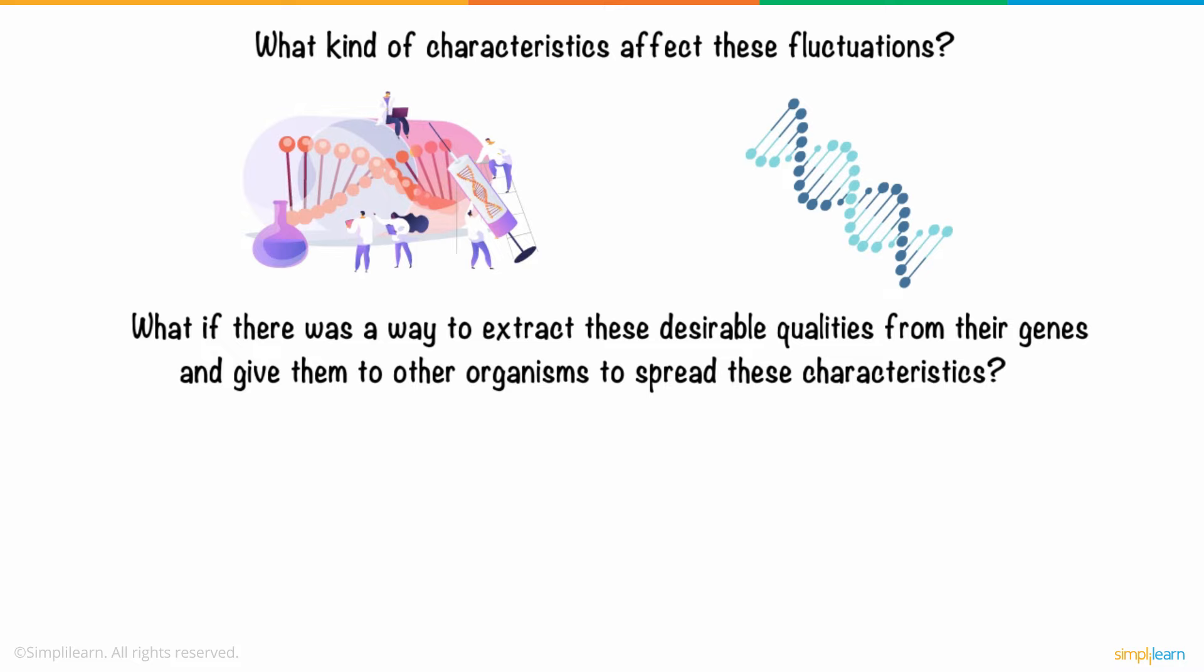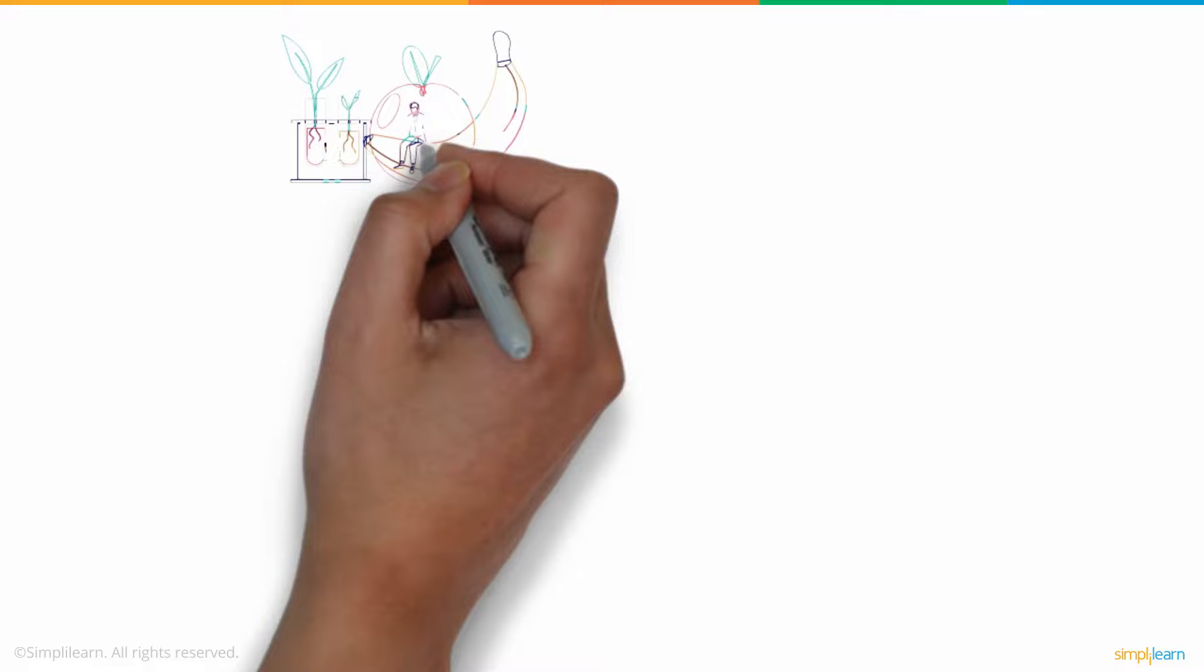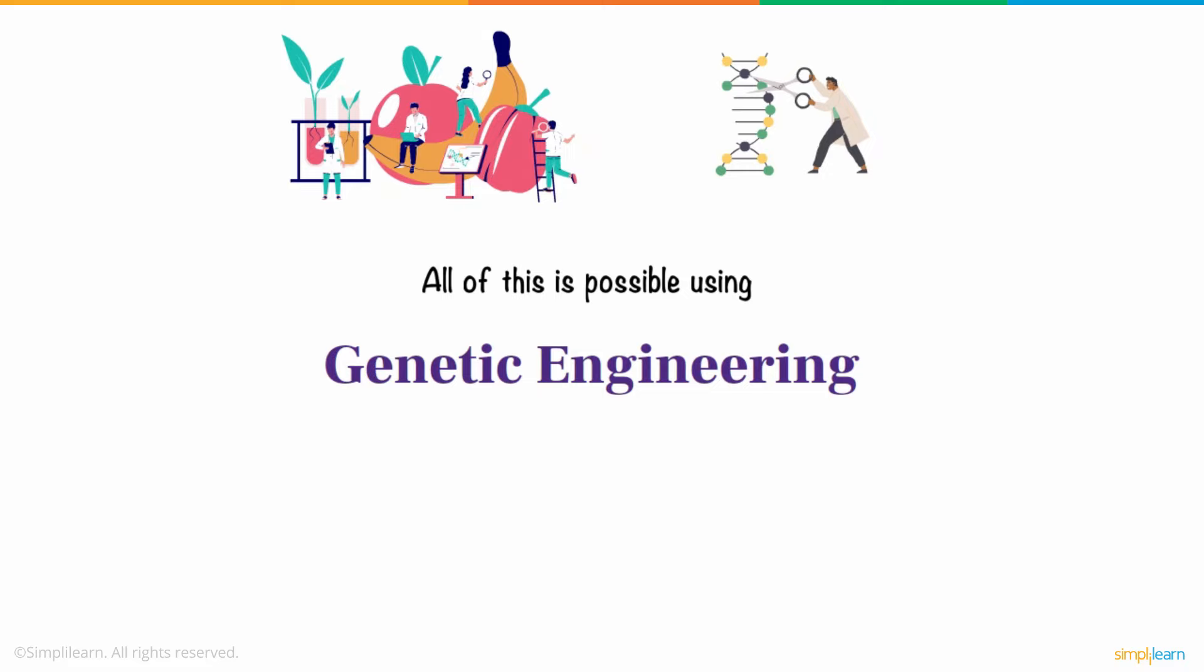If a particular animal is at risk of blood-related diseases, removing the gene that forces this vulnerability will help remove this problem. Similarly, the agriculture industry would be much more profitable if we could enhance existing crops to reduce their unnecessary effects. All of this is possible using genetic engineering.